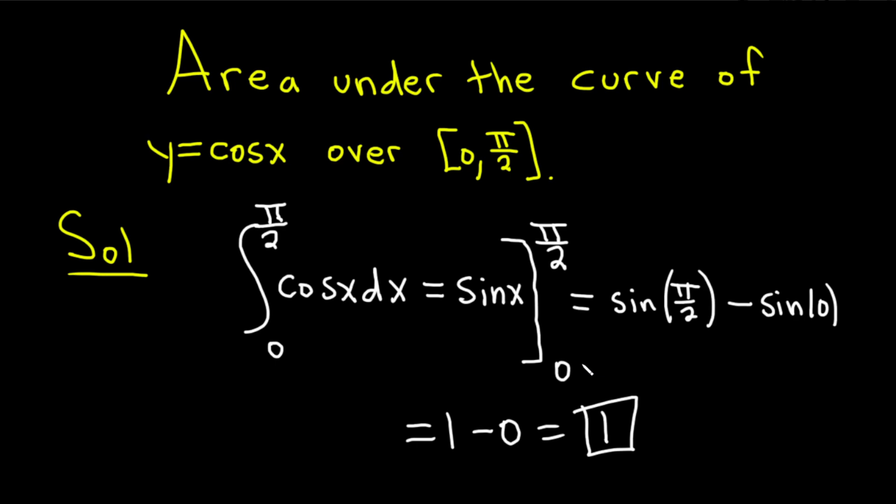So the area under the curve of the graph y equals cosine x over the interval 0 to pi over 2 is equal to 1. I hope this video has been helpful. Good luck.